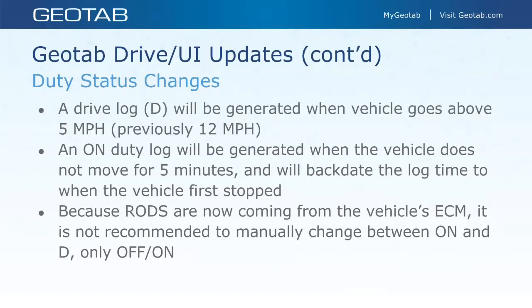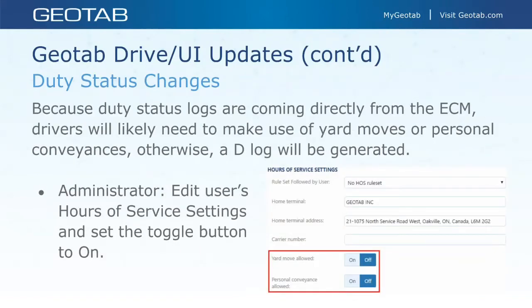This will happen automatically because it's coming from the actual ECM — the computer in the vehicle. Before, drivers had the option to manually go from on-duty to drive or drive to on-duty, but that's not recommended anymore. It can cause complications because these different record-of-duty statuses are now coming straight from the vehicle's ECM. Once the vehicle's computer says we're going five miles an hour, it's going to generate a drive status. Drivers will need to make use of yard moves or personal conveyances; otherwise a drive log will be generated. Before, you could stay under 12 miles an hour in the yard and stay on-duty — that's not the case anymore.